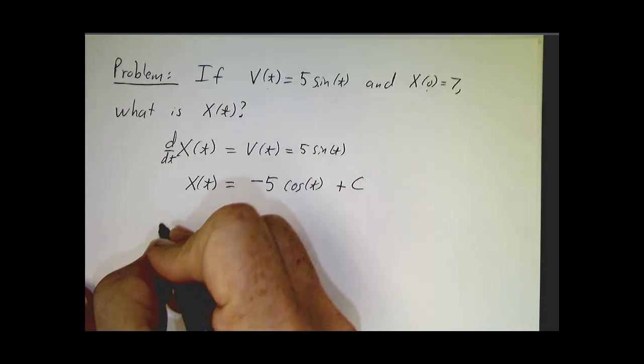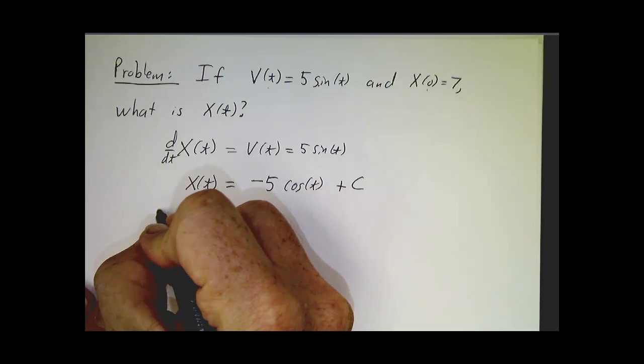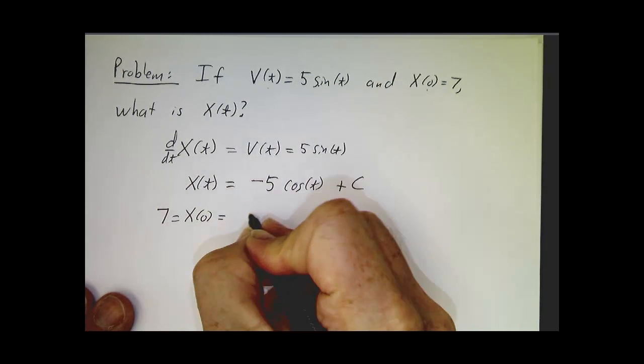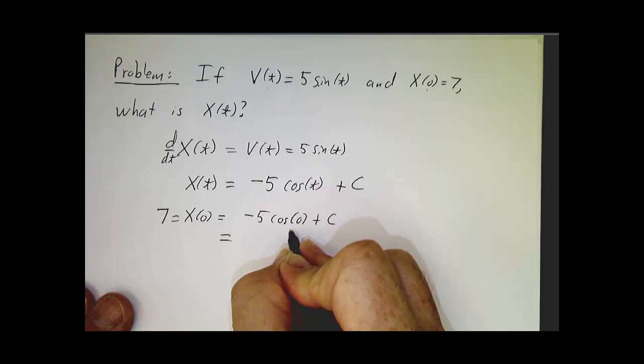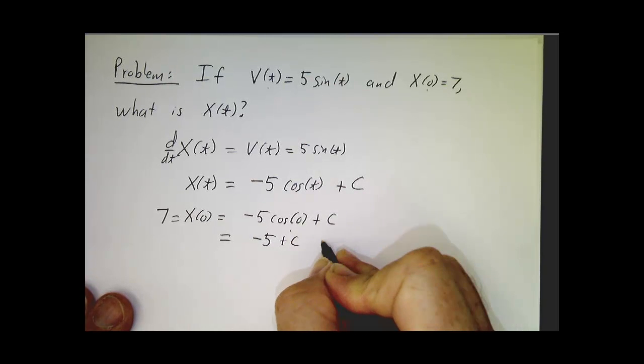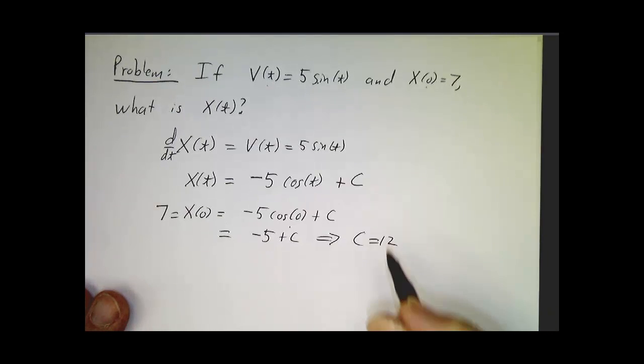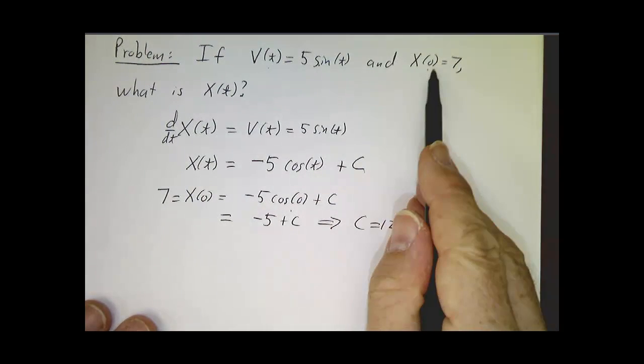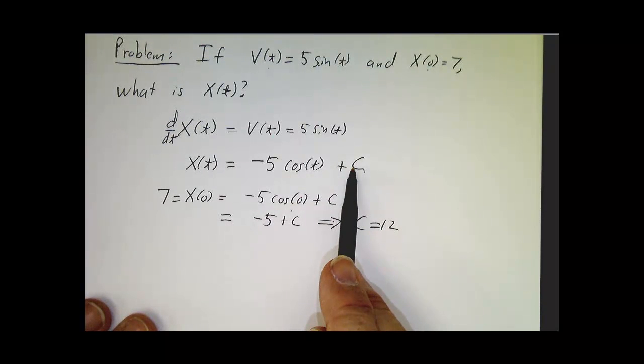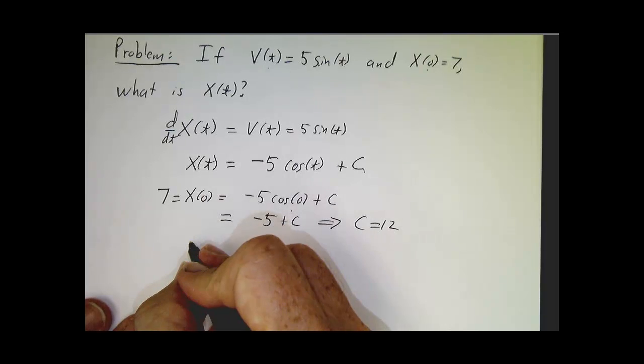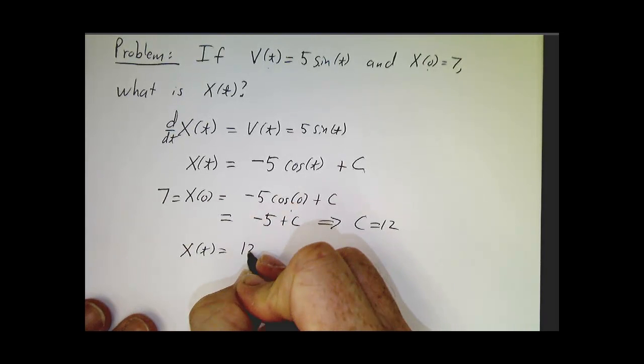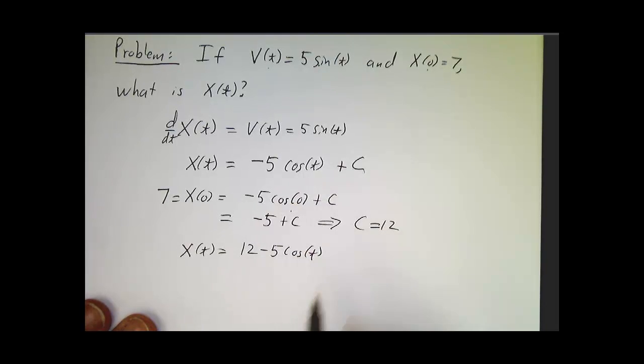How do we figure out the constant? Plug in 0. So 7 is x at time 0 is minus 5 cosine of 0 plus our constant. Cosine of 0 is 1, so this is negative 5 plus our constant. It implies that our constant is 12. The constant isn't the same thing as the initial position. The initial position was 7, the constant is 12. The constant is whatever you have to plug in to get the initial position to come out right. So in this case, x(t) is 12 minus 5 cosine of t. At time 0, that's 12 minus 5 is 7. It works.